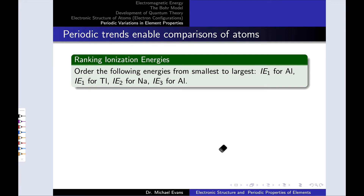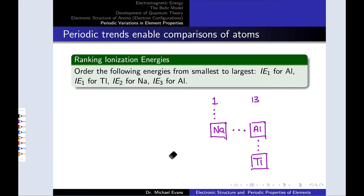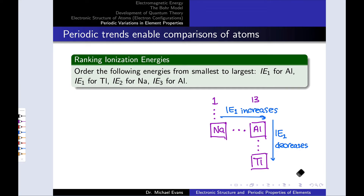In this practice problem, we're asked to rank the following ionization energies: the first ionization energy of aluminum, the first ionization energy of thallium, the second ionization energy of sodium, and the third ionization energy of aluminum. Let's orient ourselves by finding these elements on the periodic table: sodium is in group 1, and aluminum and thallium are both in group 13. Overlaying the periodic trends, IE1 increases left to right and decreases from top to bottom of a group, so aluminum's IE1 should be higher than both sodium's and thallium's IE1.